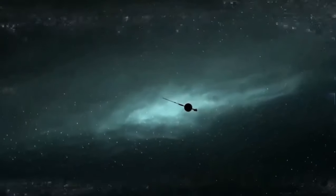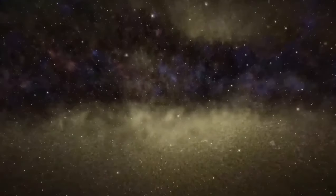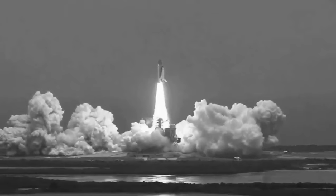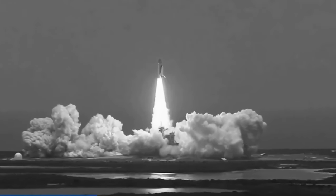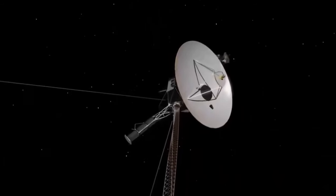The Voyager 1 spacecraft, which has been traveling through space for more than 40 years, has made an important announcement during its trajectory. Beyond its initial mission, it has exceeded all expectations. As it was expected to last only five years, now Voyager 1 has detected the presence of 300 unknown objects passing through space.